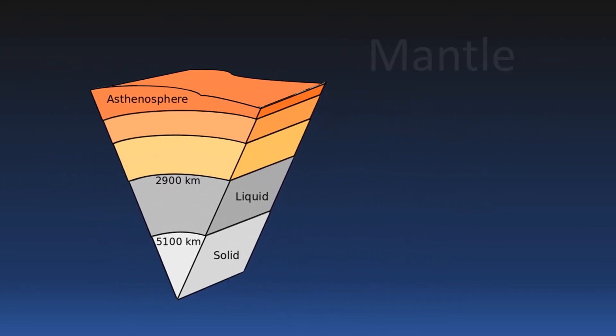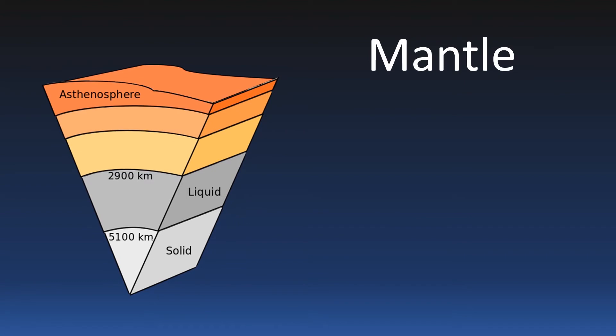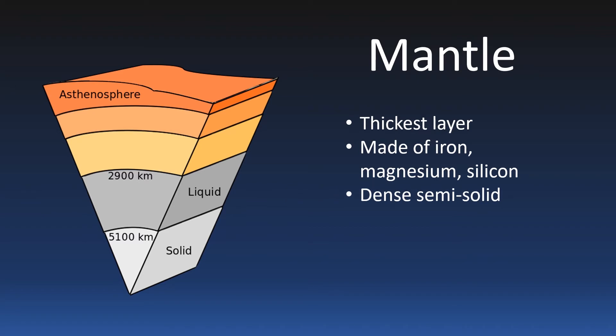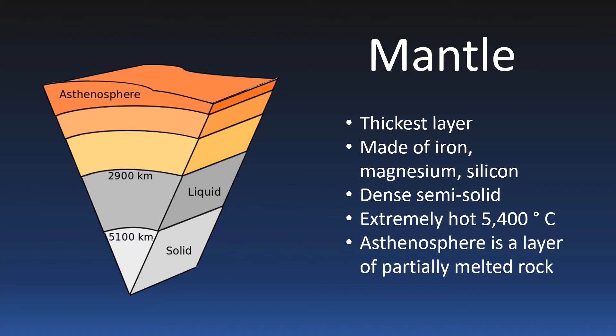Mantle. At close to 3,000 kilometers thick, it is the Earth's thickest layer. It starts 30 kilometers beneath the Earth's surface and is mostly made of iron, magnesium, and silica. It is dense, hot, and semi-solid. And just like the layer below it, this one also circulates, just slowly.